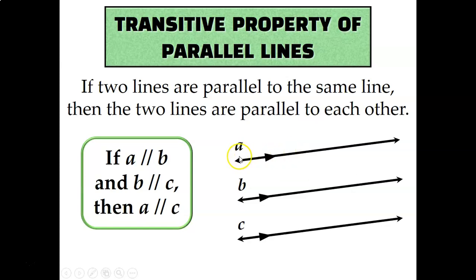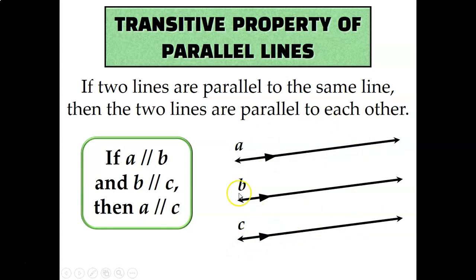Another way to say that is: if line A is parallel to line B, and line B is parallel to line C, then line A must be parallel to line C, or all three lines are parallel.